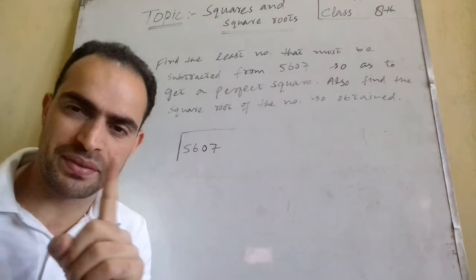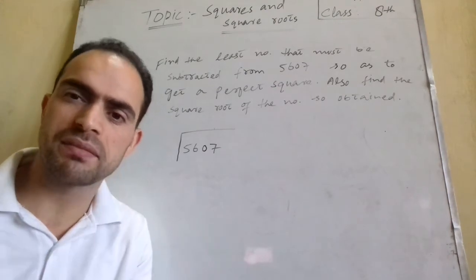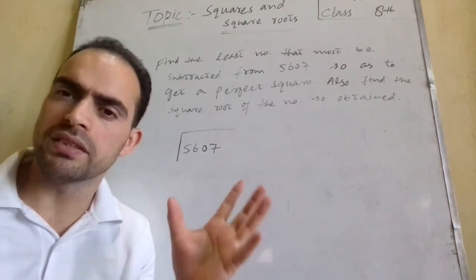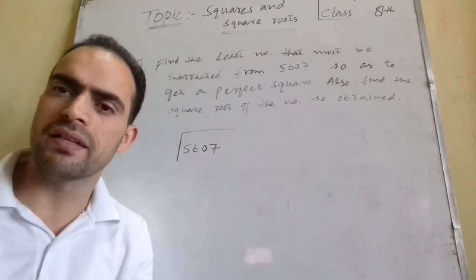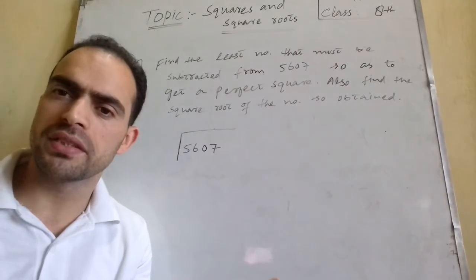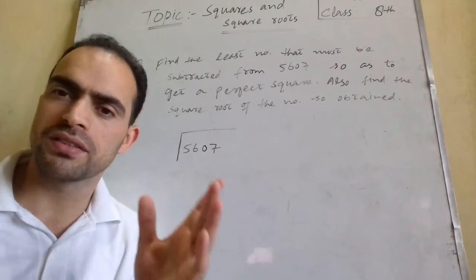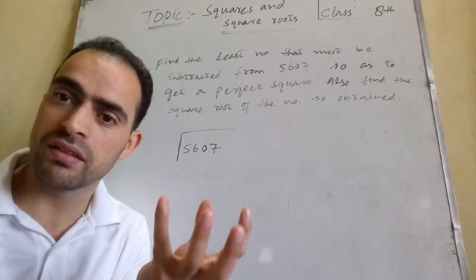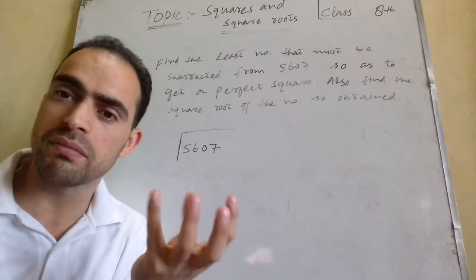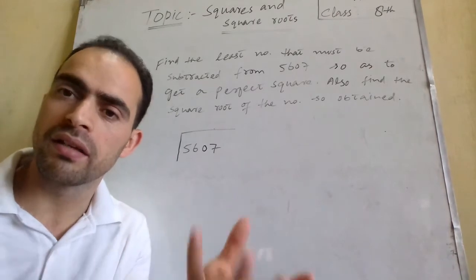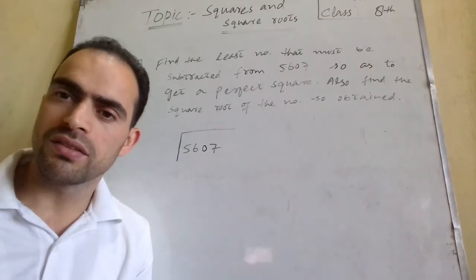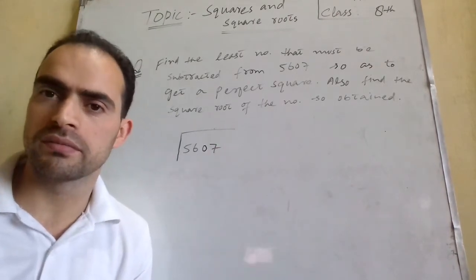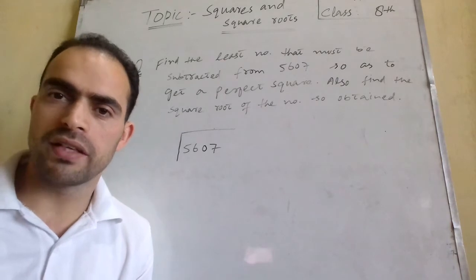When we are subtracting something from the given number, it means the given number is not a perfect square. Similarly, the question may ask: find the least number that must be added — in that case it also means the given number is not a perfect square, and some number is required to be added.